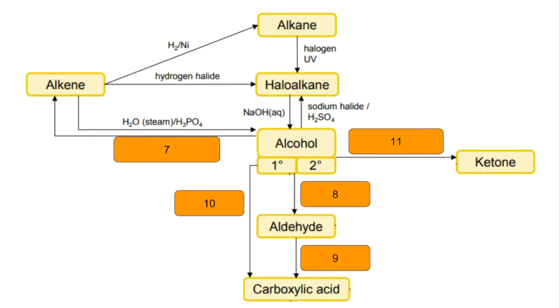Number 7: alcohol to alkene. You remove the water by using heat and an acid catalyst such as H3PO4 (phosphoric acid) or sulfuric acid.